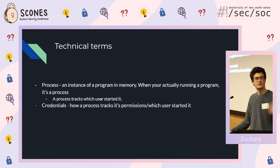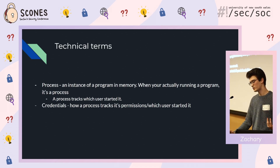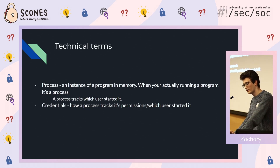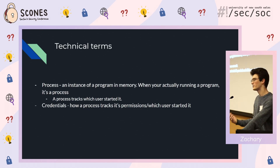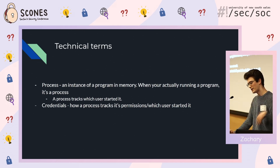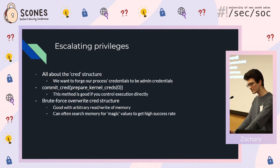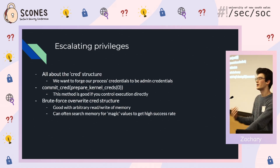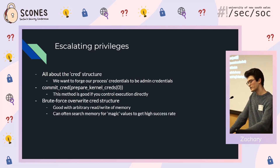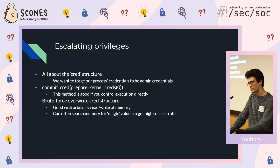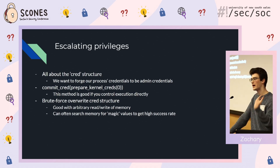A process is an instance of a program in memory, and it tracks which user started it — it matters whether you're running a command as a normal user or as an admin. The kernel tracks this via the process's credentials. When we talk about escalating privileges, it's mostly about that credential structure.